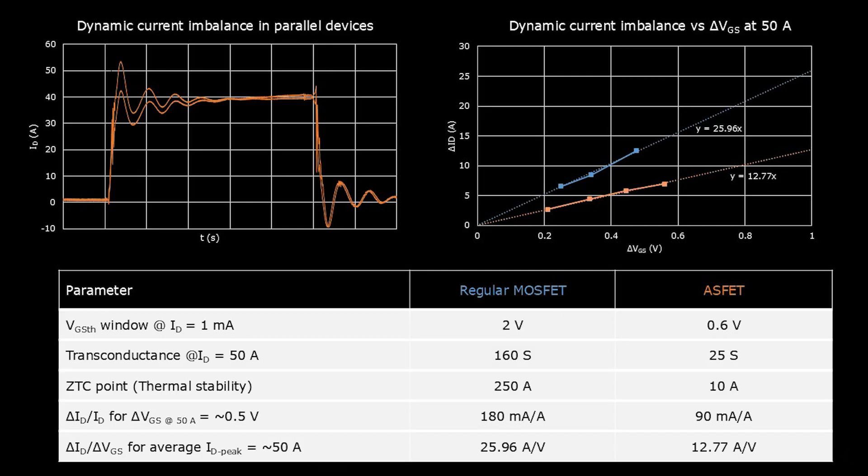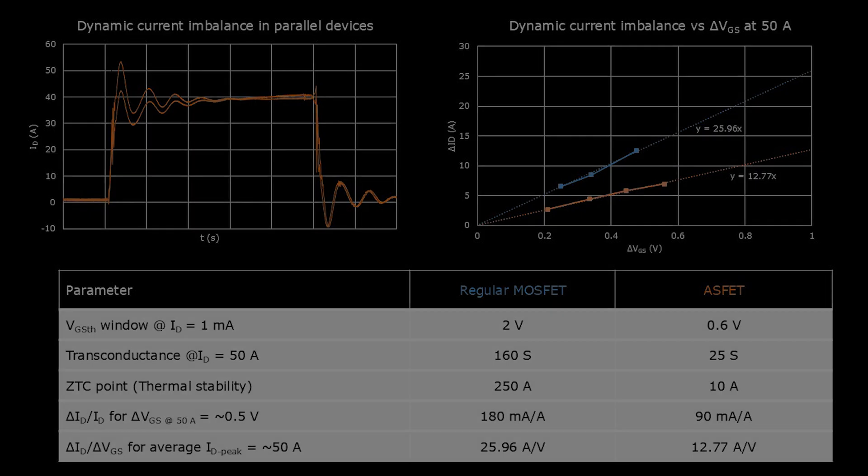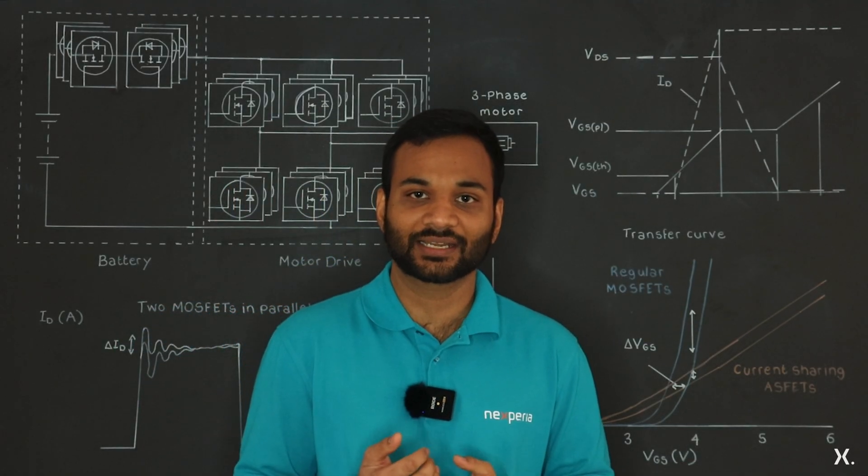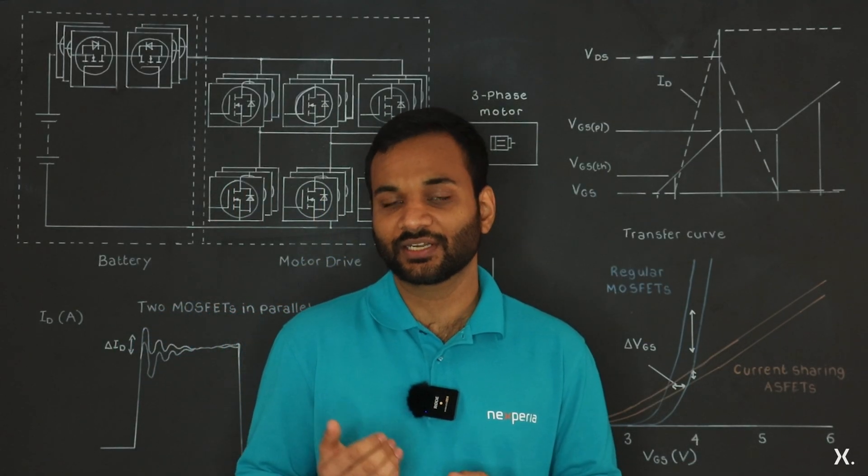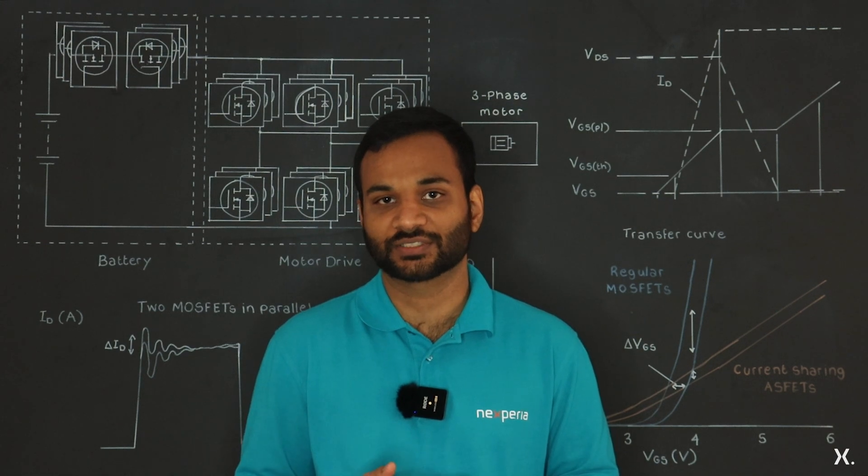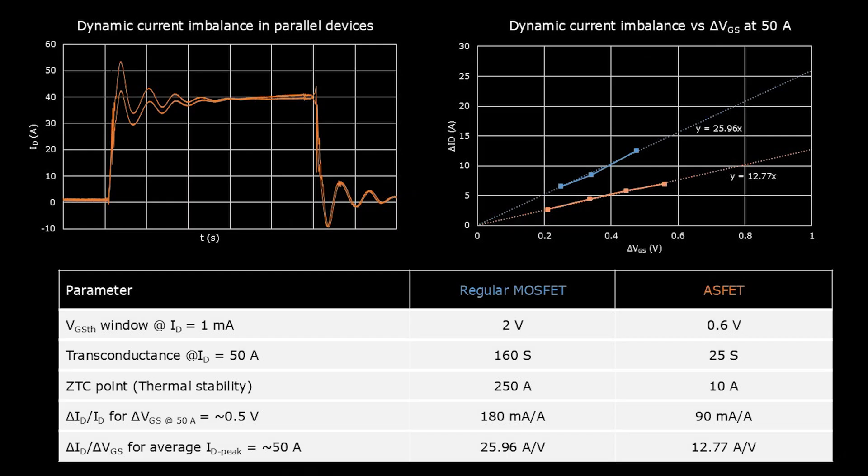So the graph on the right shows us that a perfectly matched device will share current uniformly. As the mismatch increases in the VGS, the delta ID also increases. But the increase in the delta ID for an ASFET is significantly lower than that for the regular MOSFETs, being about 13 amperes per volt for the ASFET, while being 26 amperes per volt for the regular MOSFETs.